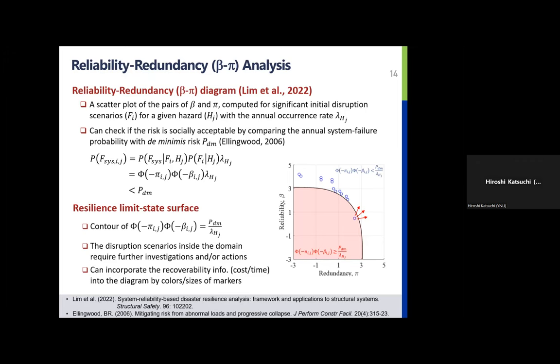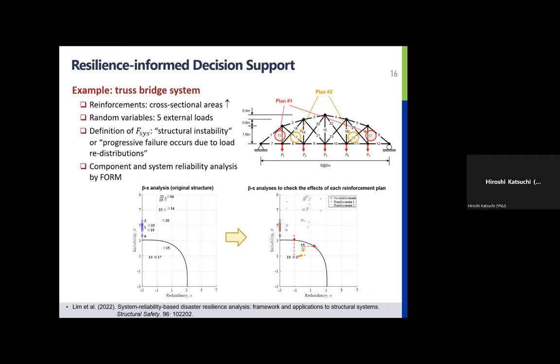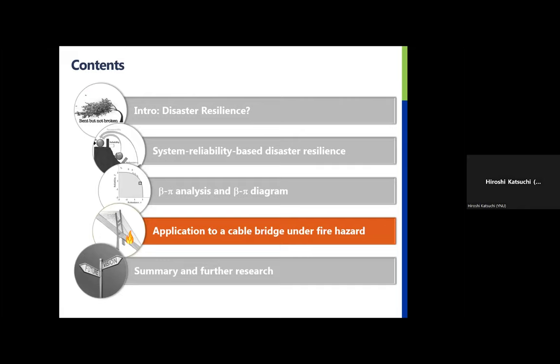Because of time limits, I'll skip the illustrative example. But for this truss structure, even though we have two reinforcement plans with the same number of members, depending on which member you retrofit, you will have a different result in the beta-pi diagram. Now I'll show the Sohae Grand Bridge example to wrap up. This time it's a fire initiated by a tank truck accident. Suppose this fire induces huge heat — the strength of these cables will be reduced, thermal expansion will be introduced to the structure, and if any cable fails, the load will be redistributed and the system becomes totally different. This is indeed a very complex hazard for a critical infrastructure system.